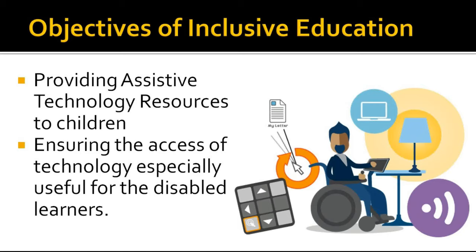The next objective is providing assistive technology resources and ensuring their access to the learners. Assistive resources are any equipment, software, or product systems which are used to increase or improve the functional capabilities of learners with special needs and enable them to learn independently. For example, for students having vision limitations, text-to-speech technology supports them in learning. For children struggling with verbal skills, they can be assisted by an app called Visual Scene Display. Thus, it is important to provide students with assistive technology resources in inclusive classes to capitalize on their strengths and mitigate their weaknesses.